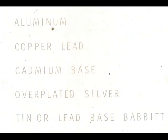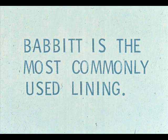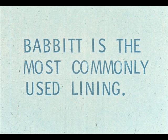The lining or coating used in sleeve bearings may be made of a variety of materials, such as aluminum, copper lead, cadmium base, overplated silver, and babbit. Of all the different metals, a tin or lead-based babbit is the most commonly used.